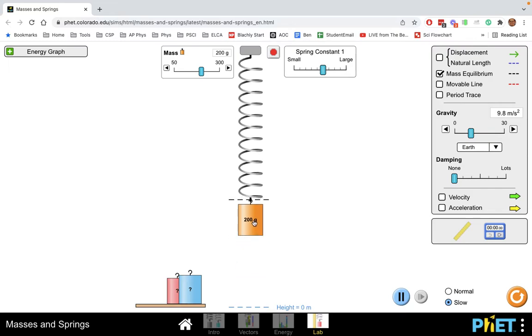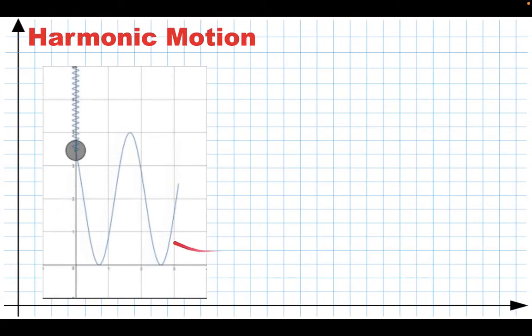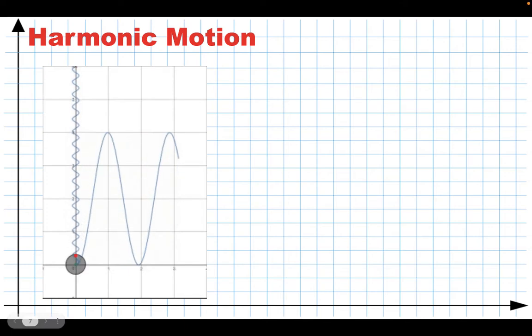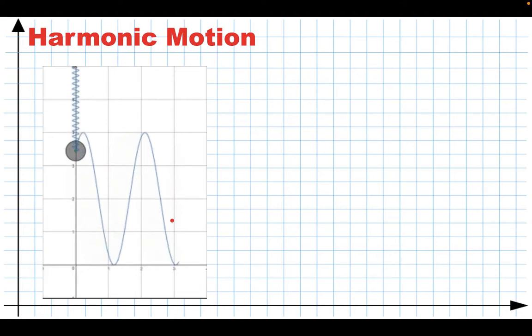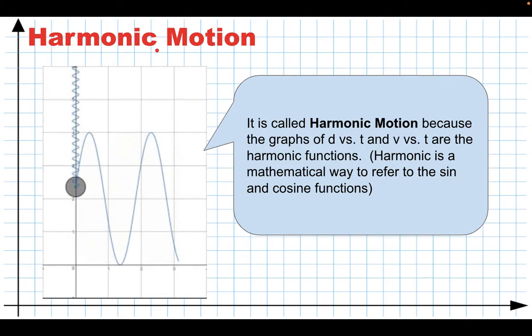So when you have a linear restoring force acting on a mass, and that mass is disturbed, it oscillates, and it follows what we call simple harmonic motion. And I'll show you why we call it that. You can play with that simulator I was just showing you there. If I have a mass on a spring moving up and down, and I plot its position versus time, it turns out you get these really nice sine and cosine waves. And sine and cosine waves are called the harmonic functions by mathematicians. So that's why we call it a harmonic motion, because its motion is described by a sine or a cosine.